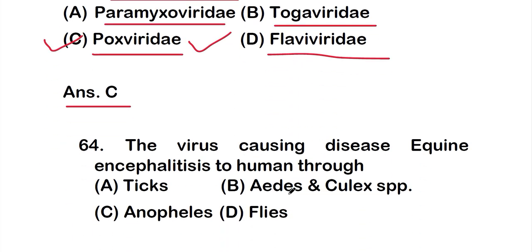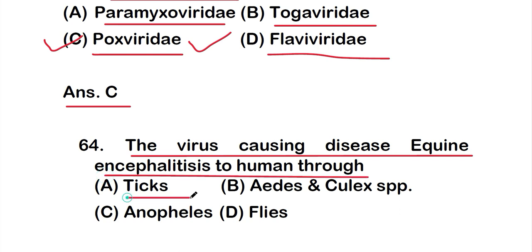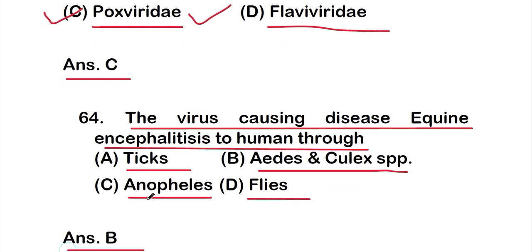Question number 64: The virus causing disease equine encephalitis is transmitted to humans through — option A: ticks, option B: Aedes and Culex species, option C: Anopheles, or option D: flies. The correct answer is option B — through Aedes and Culex species of mosquitoes.